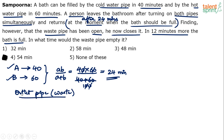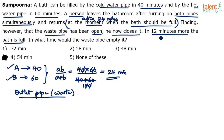When the outlet pipe is closed, only two pipes — A and B — are working. It takes 12 minutes more for the bath to be full. We know A and B can do the full job in 24 minutes, so in 12 minutes they will do half of the work. This means in those 12 extra minutes, they filled half of the bath. Therefore, in the first 24 minutes, only half of the bath was filled.